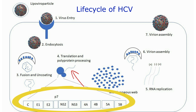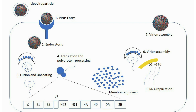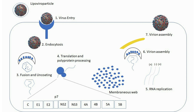The non-structural proteins and some host factors form a replication complex that synthesizes multiple copies of the HCV RNA genome through a minus-strand replicative intermediate. Packaging of the viral progeny takes place in the endoplasmic reticulum, from which the virion acquires the envelope with E1 and E2 glycoproteins.